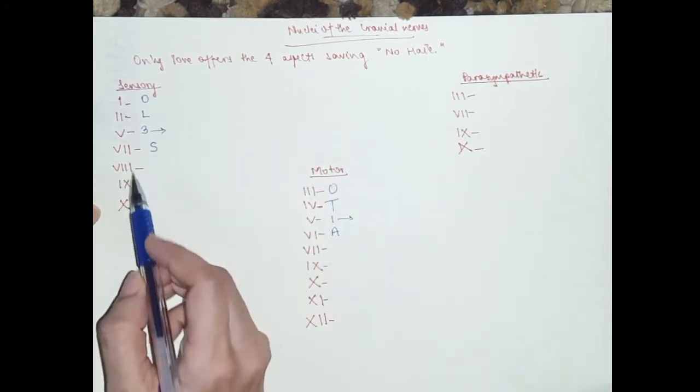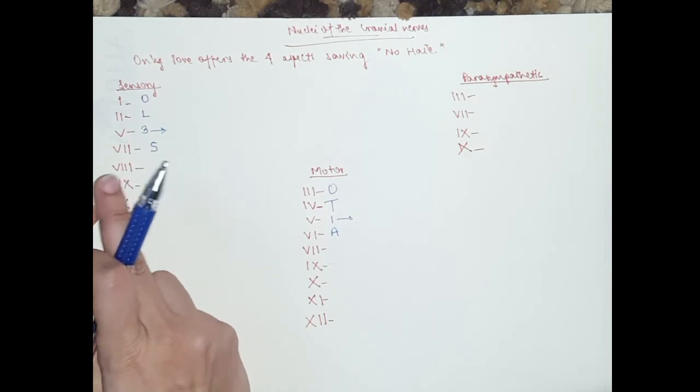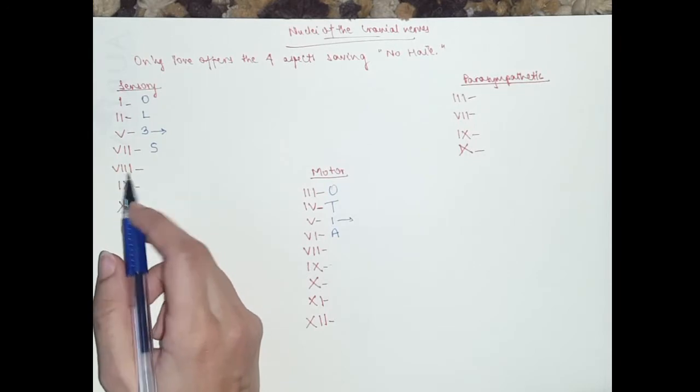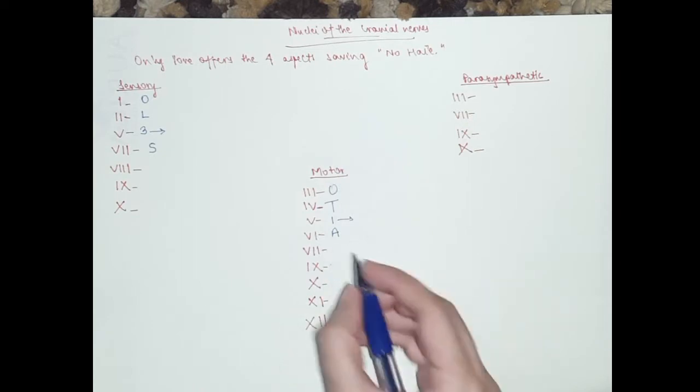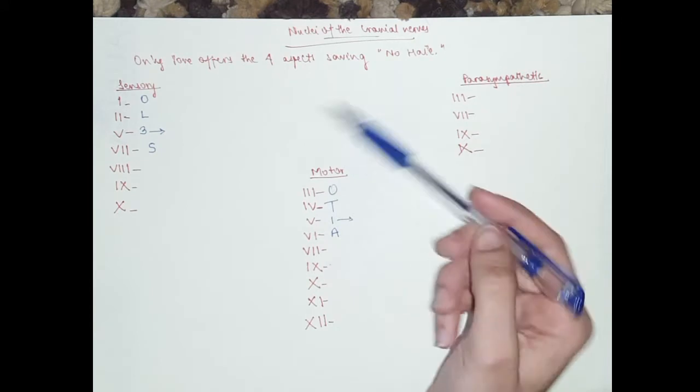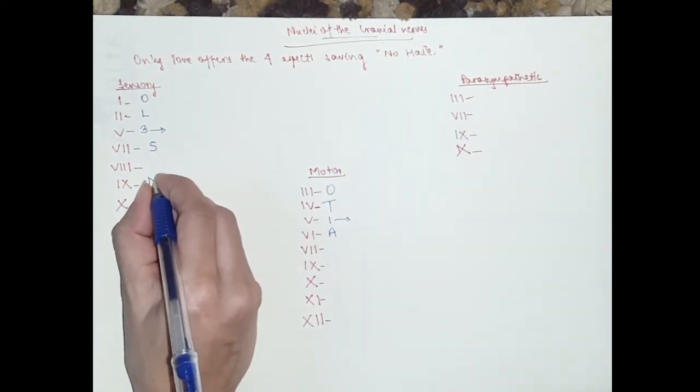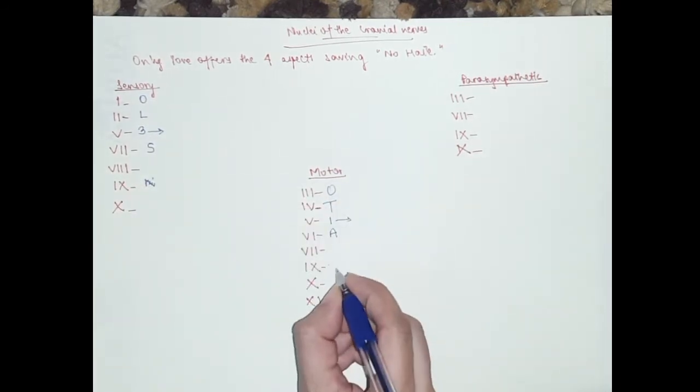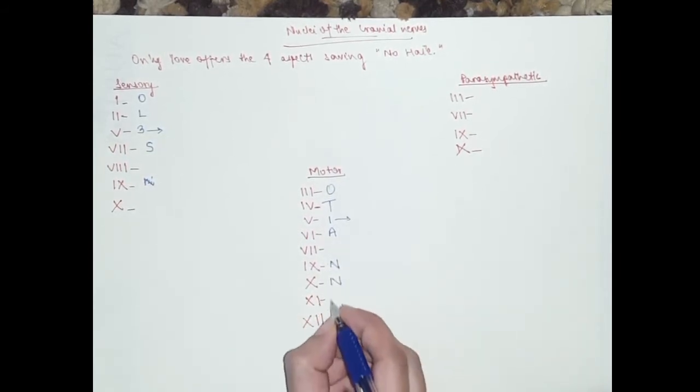And I have not put anything for eight because the nuclei takes the name of the cranial nerve itself and it's easy. So I've left that one out in the mnemonic. Then we've got no, hate, which would be this.